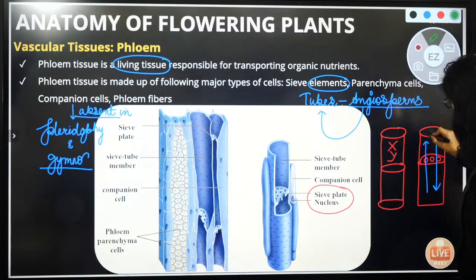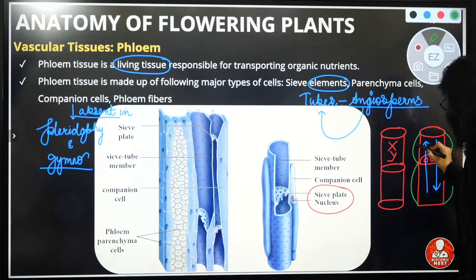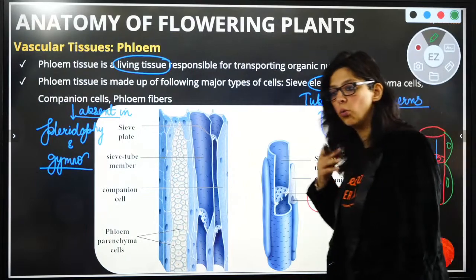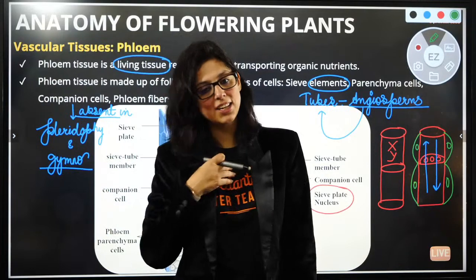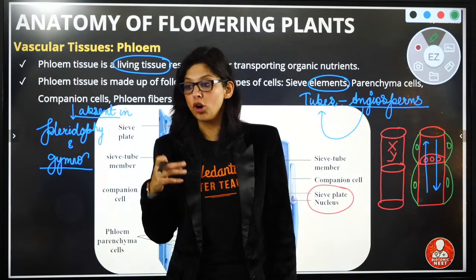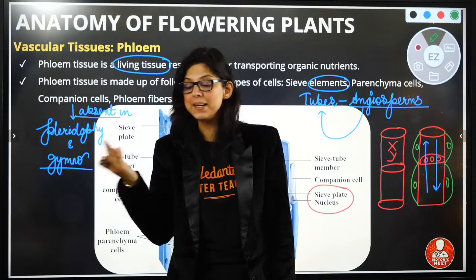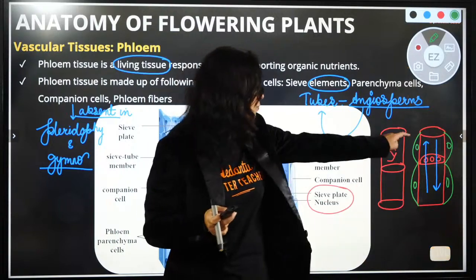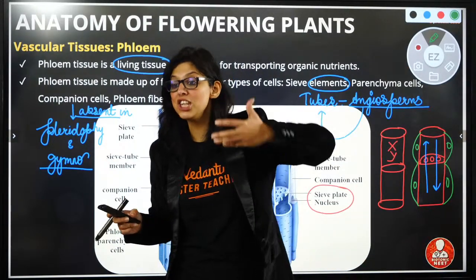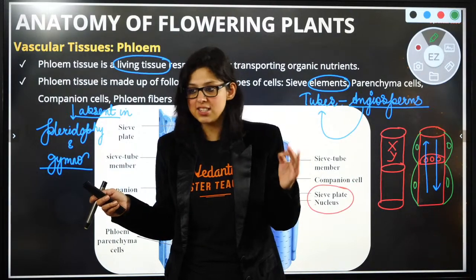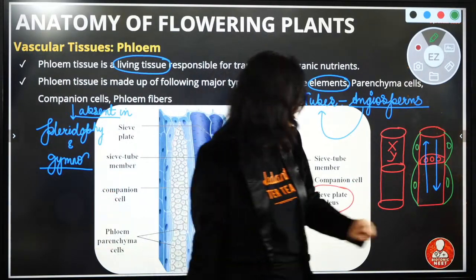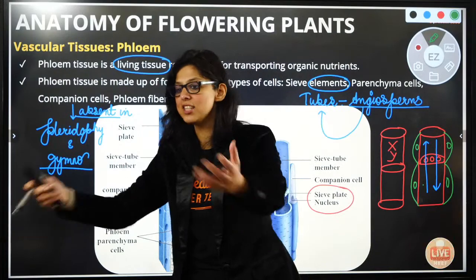The companion cell has a nucleus because it needs to regulate a lot of information for things to move up and down. That happens because of the companion cell's nucleus. Companion cells contain a large number of ribosomes and mitochondria because they need to regulate. The connection between two plant cells is called plasmodesmata — sieve tube elements get information from companion cells through plasmodesmata.